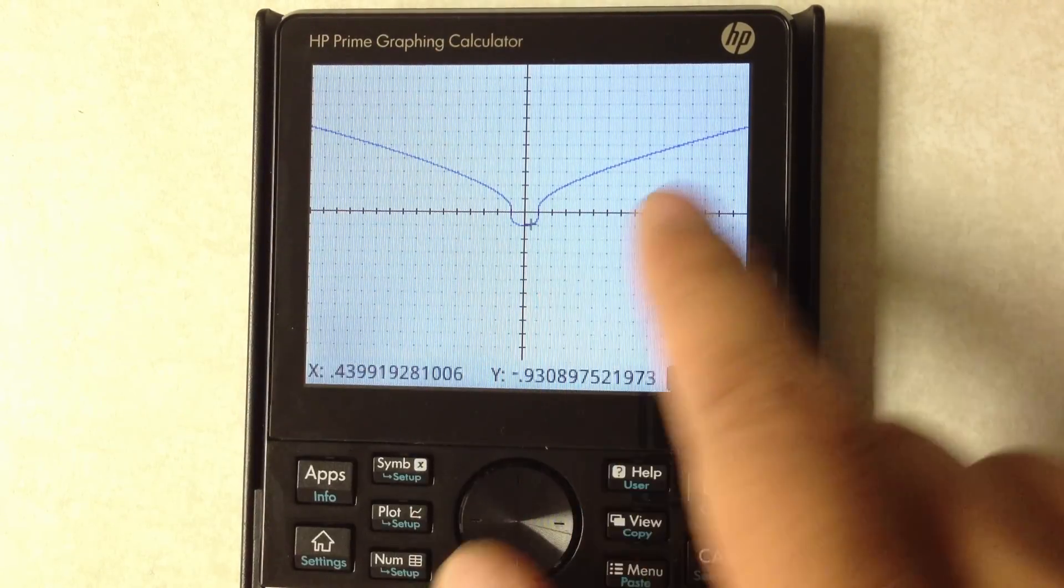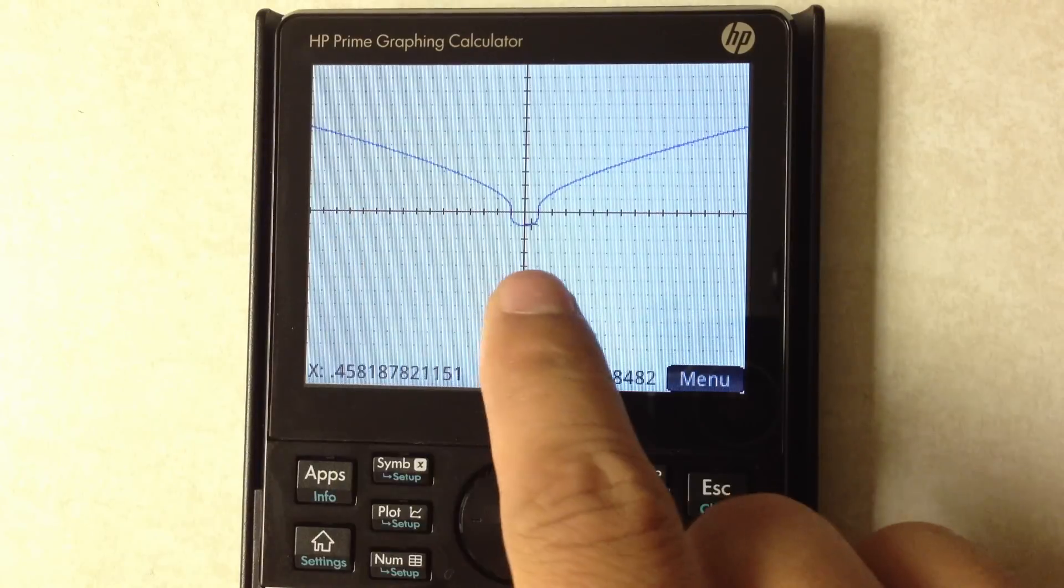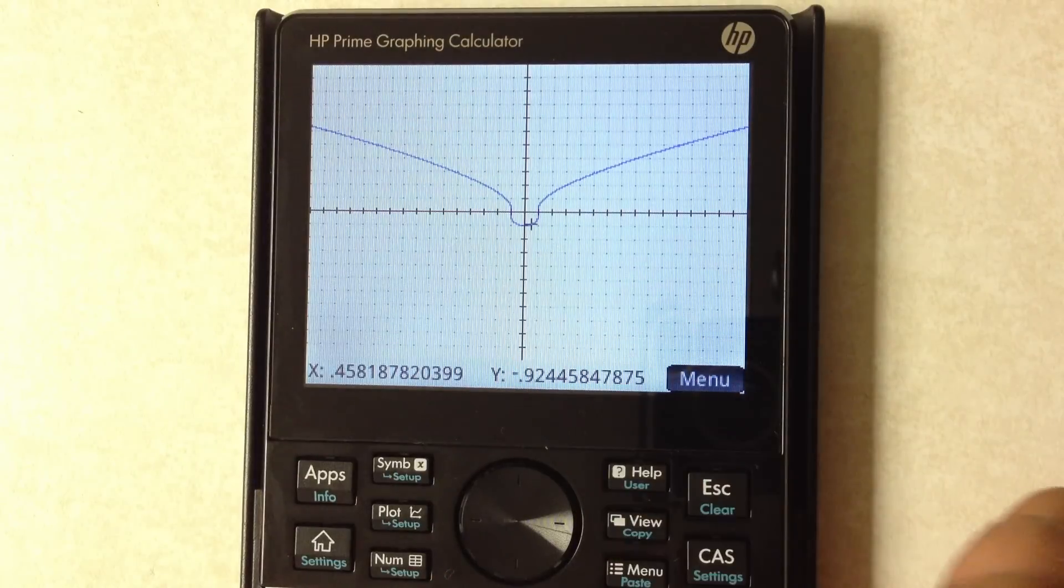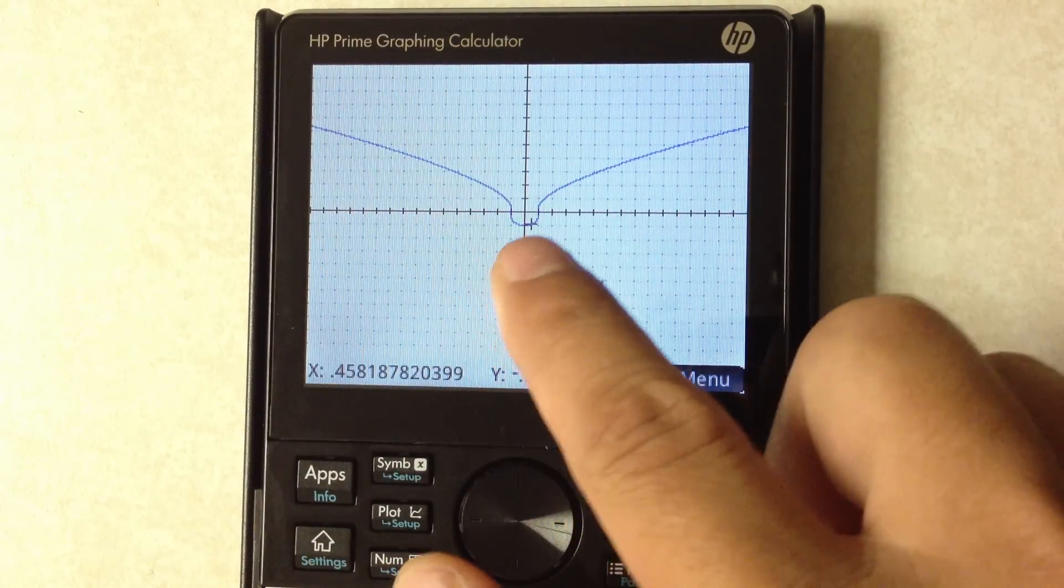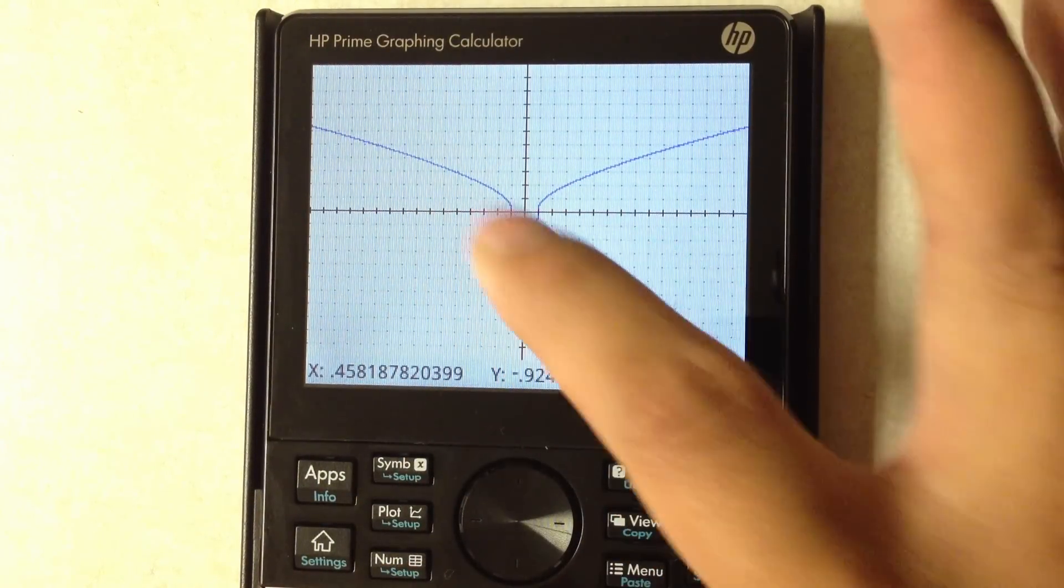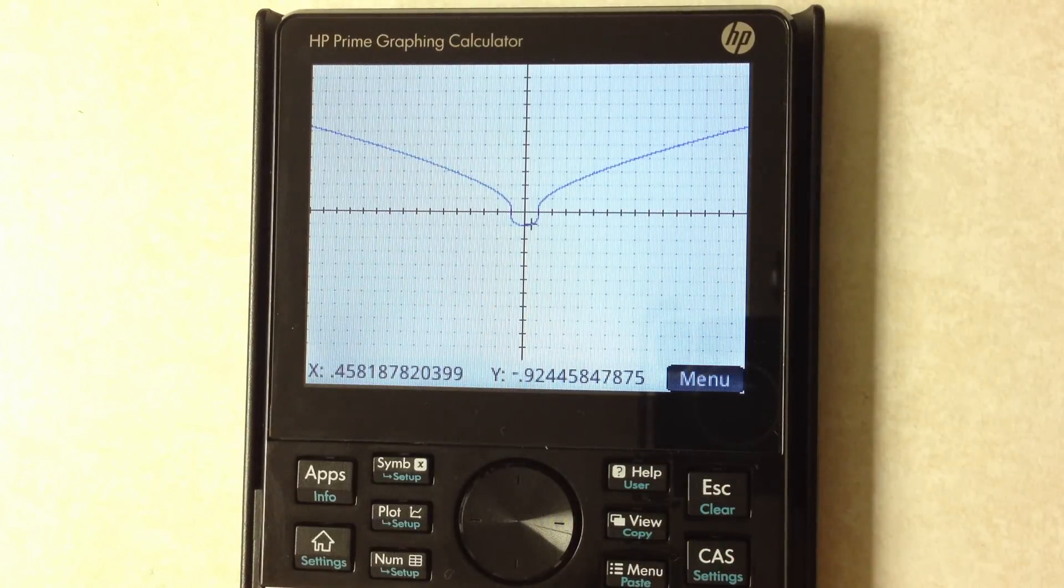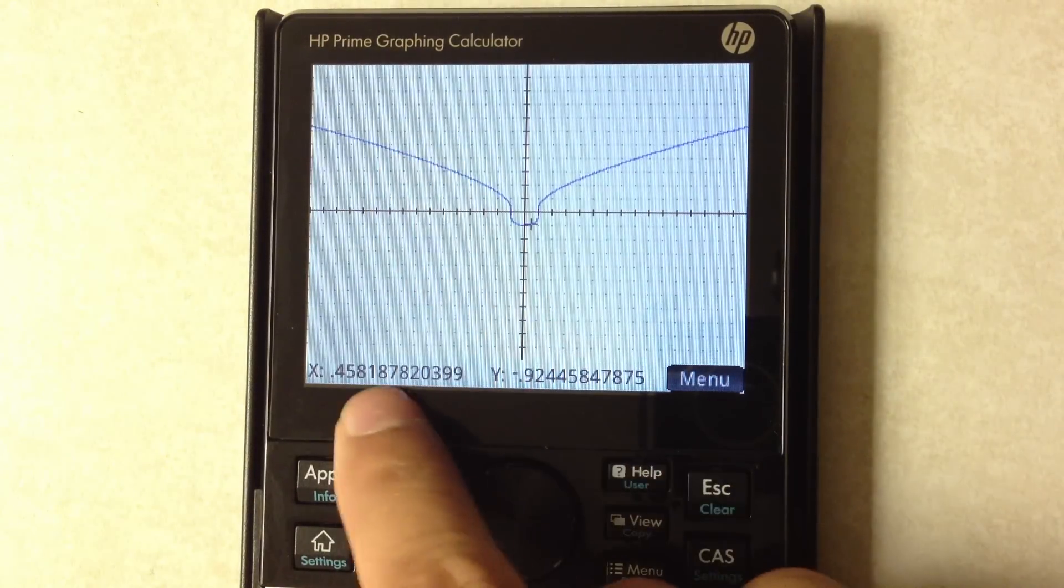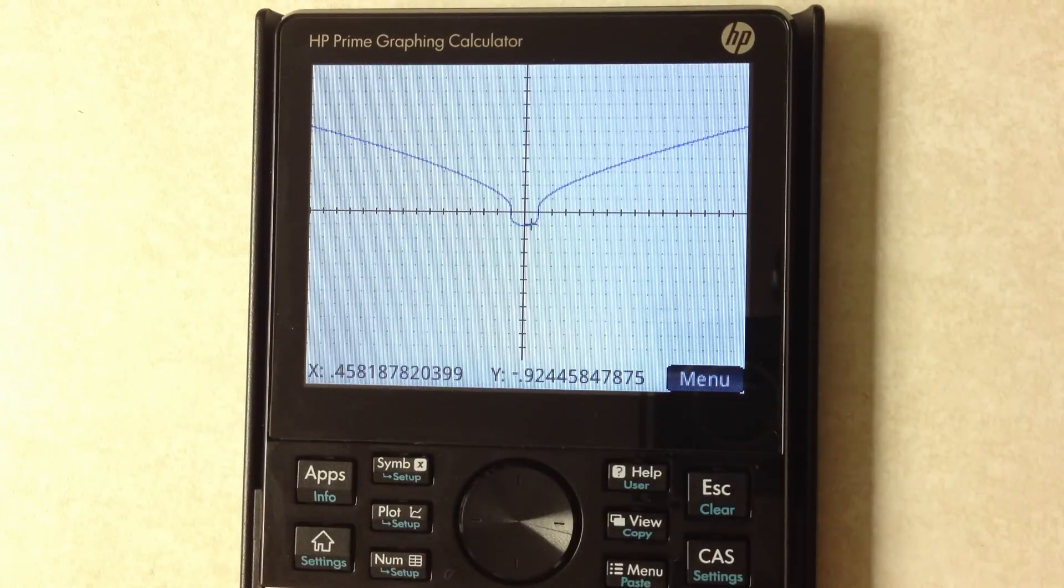The numbers down here were changing and I imagine the way it does this plot is it first gives you a very rough sketch of the graph and then it starts to sort of fine tune the coarse graph into something nice like this that you see here. And as it's doing that I imagine that's why the x and y values were changing.